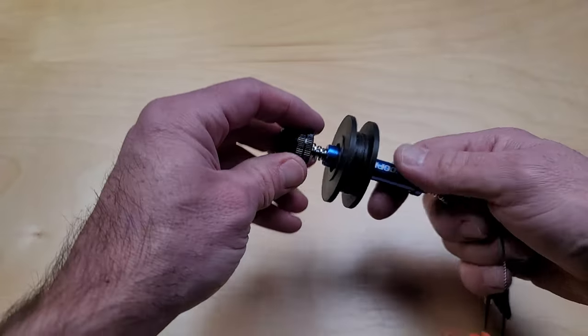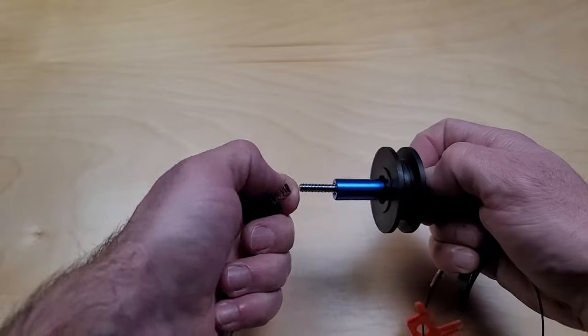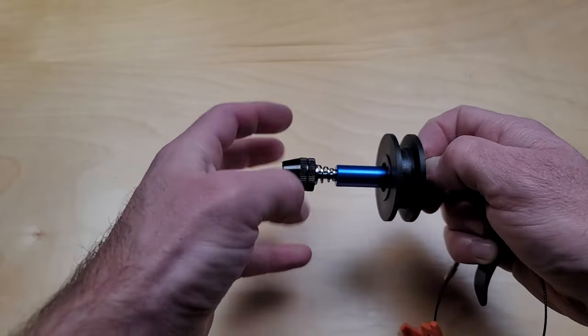It just attaches in a couple of different ways. So for a road bike, you would slide the skewer through just like a quick release, attach this onto that.